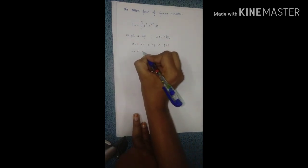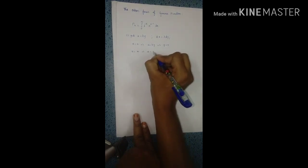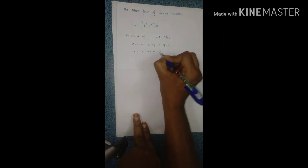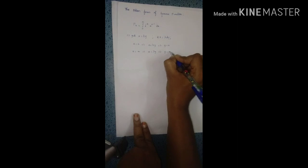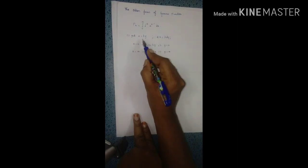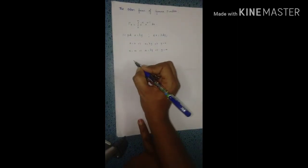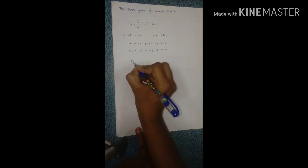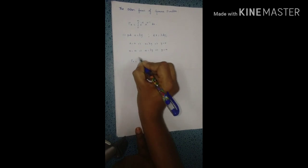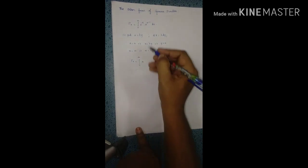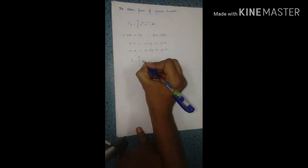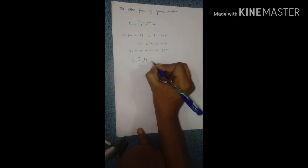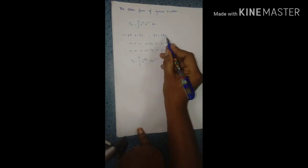Substituting into the equation, the integral from 0 to infinity becomes: e to the power of minus x becomes e to the power of minus lambda y; x to the power of n minus 1 becomes lambda y to the power of n minus 1; and dx becomes lambda dy.